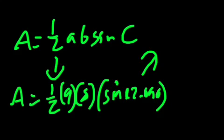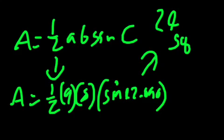And that comes to, in the calculator, 1 over 2, 9, 8, sine 42.09. That is equal to 24 square units.